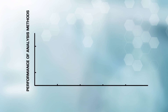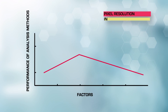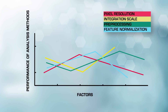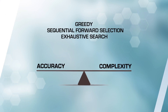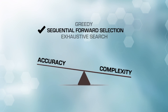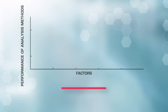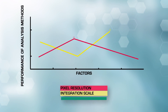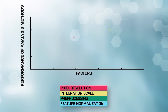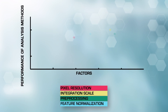The choice of all factors — pixel resolution, integration scale, image pre-processing, and normalization method — directly affects the performance of the analysis methods. Of the three approaches, sequential forward selection offered the best trade-off between accuracy and complexity. Texture analysis methods are sensitive to changes in multiple factors, and this study suggests the best approach for determining the most appropriate combination of factor values, thereby aiding more accurate reading of mammograms.